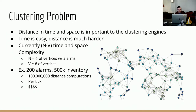This ends up using a lot of memory and takes a really long time to compute. For example, if you had a graph with 500,000 inventory nodes and 200 of those nodes had faults on them, that would result in 100 million distance computations being calculated and cached every time a correlation interval ticks.